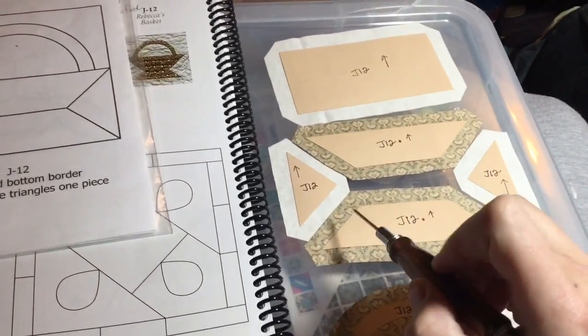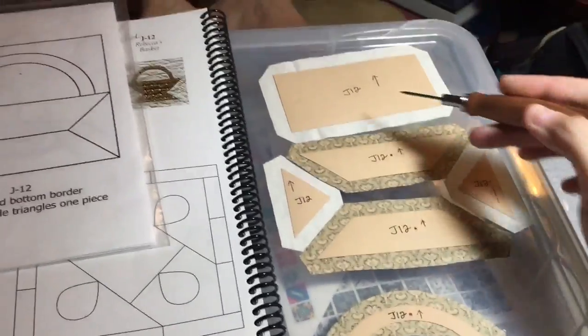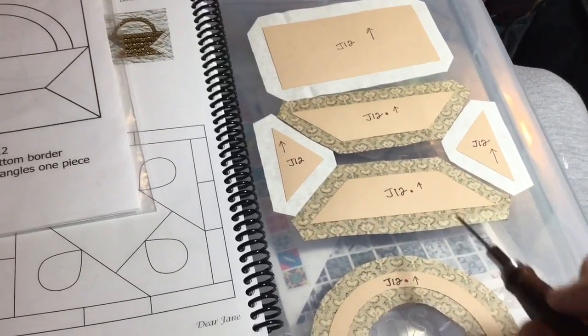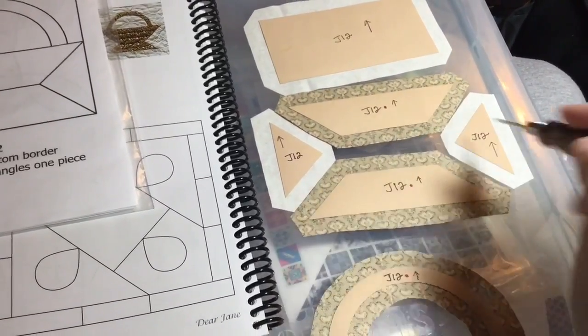For assembly, I'm obviously just going to put this together, attach it to this, and then applique this on. So this is going to be quite straightforward. The very first thing I'm going to do is assemble these four pieces.